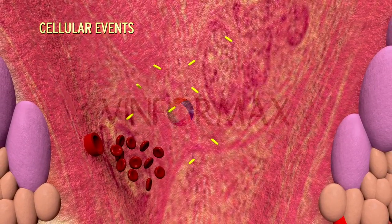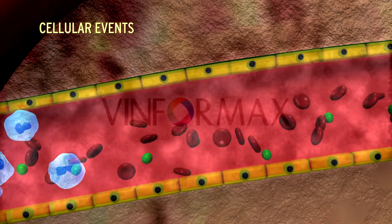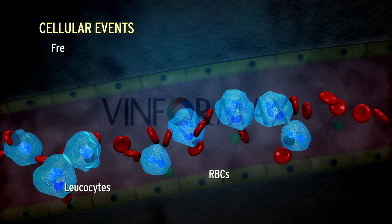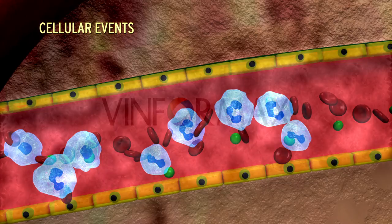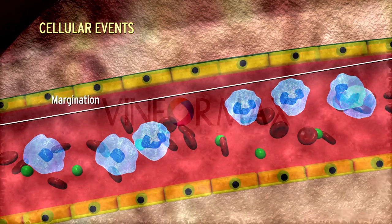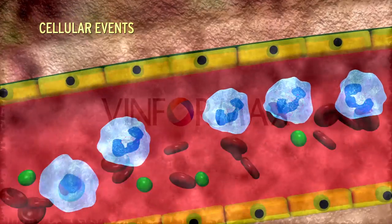There are changes in the normal axial flow of blood in the microcirculation due to stasis. The normal axial flow consists of a central stream of cells comprised of leukocytes and RBCs, and a peripheral cell-free layer of plasma close to the vessel wall. As a result of slowing and stasis, the central stream of cells widens and the peripheral plasma zone becomes narrower due to loss of plasma by exudation — this is called margination. The neutrophils of the central column come close to the vessel wall; this is called pavementing.